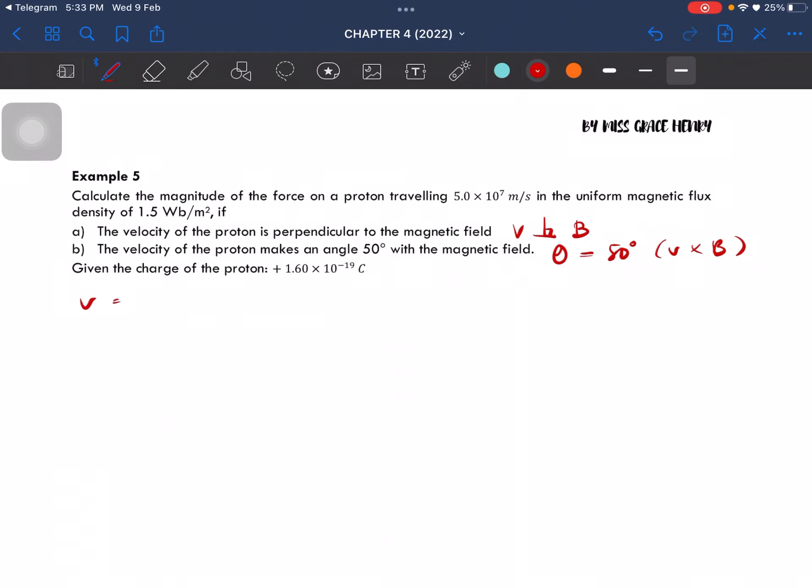The velocity is equal to 5 times 10 to the power of 7 meter per second, and the magnetic flux density is 1.5 Tesla or Weber per meter square.